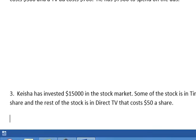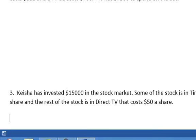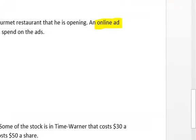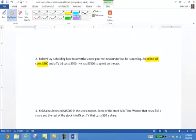I'll go with the middle one just to give you an idea. In this example, Bobby Flay, the famous cook, is deciding how to advertise a new restaurant. An online ad costs $300. I'm looking at online ad for $300. A TV ad costs $700. The total he's spending on the ads is going to be $7,500.